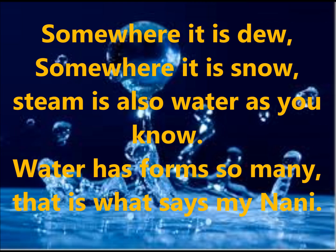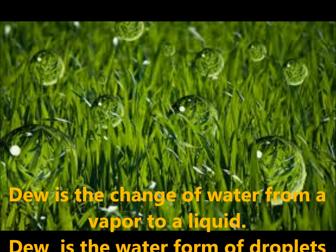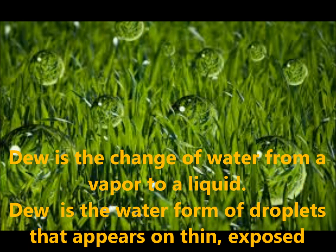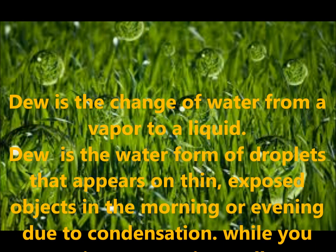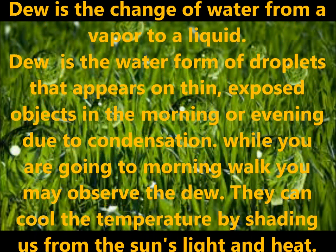Let us see the second stanza. Somewhere it is dew, somewhere it is snow. Steam is also water. As you know, water has so many forms — that is what says my Nani. In this stanza, we are going to learn about water forms. Water changes into dew, snow, and steam. Dew is the change of water from vapor to a liquid. Dew is the water form of droplets that appear on thin and exposed objects in the morning or evening due to condensation.